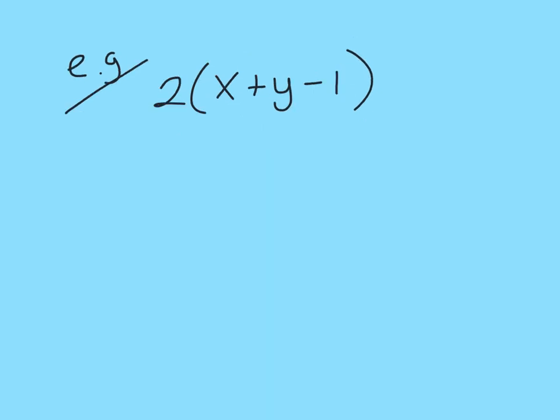Okay, so let's look at something a little bit more difficult. This time you'll see that this one has 3 terms in the bracket. But we do the exact same thing. All we are going to do is multiply 2 by each term in that bracket. So let's start. 2 by x plus 2 by y minus 2 by 1.